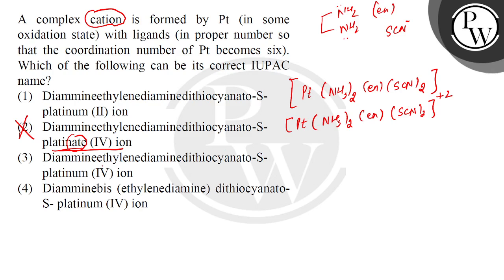In the third option, it is called Diamine-ethylene-diamine-dithiocyanato-S-platinum(IV) ion. This will be something like this. The formula will be Pt, NH3 twice, EN, SCN twice. And for the four coming, what do you do here? Plus two. Platinum-four-oxidation-state for the coordination of the four-oxidation-state, the cation will be something like this.